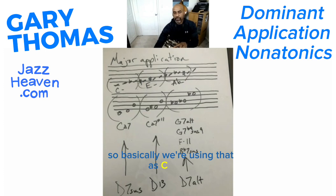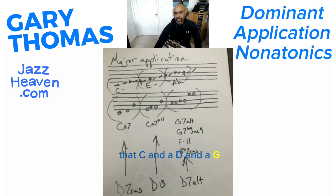If you look below that, you see D7 sus — the C, D, and G pretty much suggest that you have a D7 sus. And then below the C major 7 sharp 11, with the E, F sharp, and B, that looks like a D13 without the root.